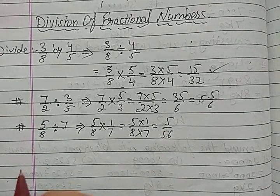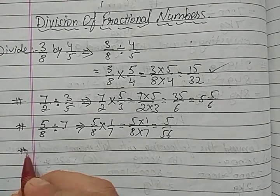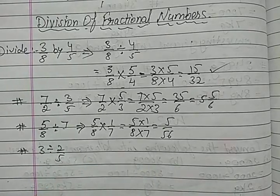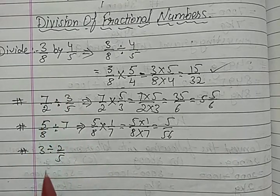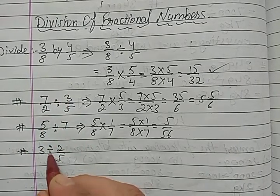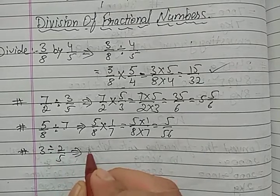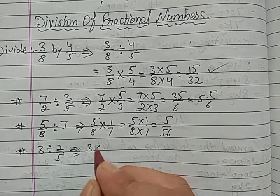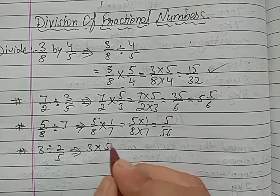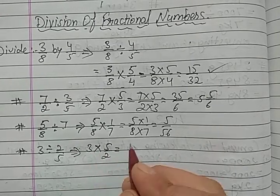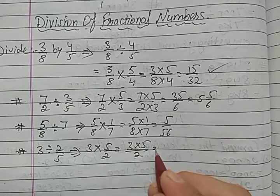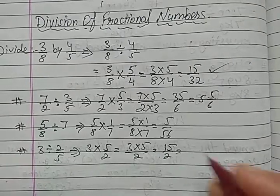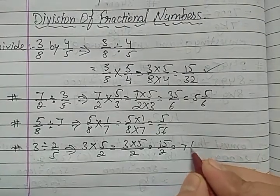Multiply numerator with numerator and denominator with denominator: 5 multiplied by 1 is 5, and 8 multiplied by 7 is 56. So the answer is 5 upon 56. If we want to divide a whole number by a fractional number, the procedure is the same — multiply by the reciprocal of the divisor, which gives 15 upon 2. This is an improper fraction, so it becomes 7 and 1 upon 2.